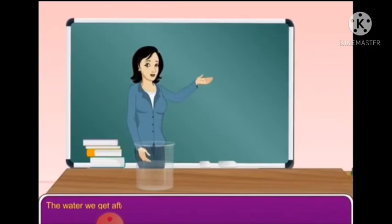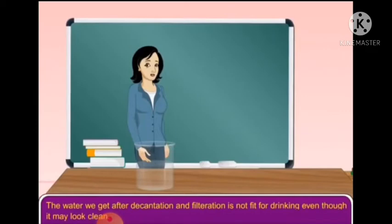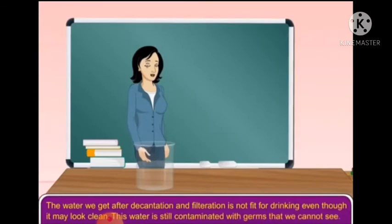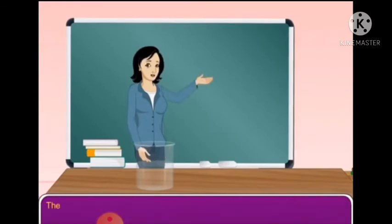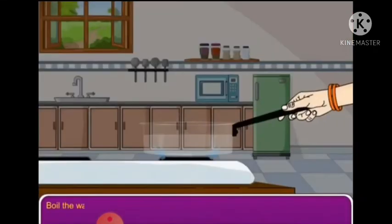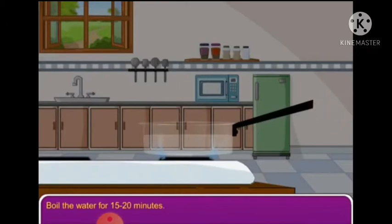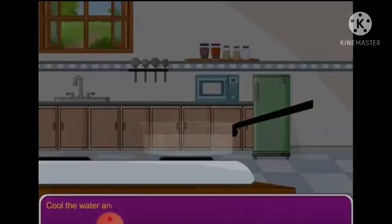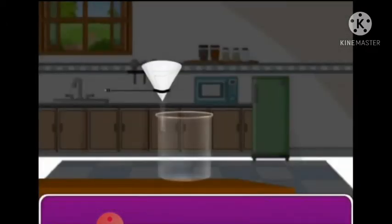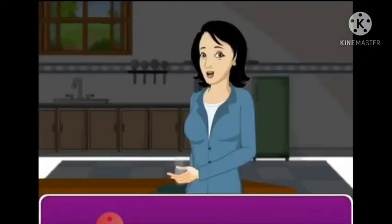The water we get after decantation and filtration is not fit for drinking, even though it may look clean. This water is still contaminated with germs that we cannot see. The germs from this water can be removed by boiling. Boil the water for 15 to 20 minutes, then cool the water and filter it. Now we get safe water to drink.